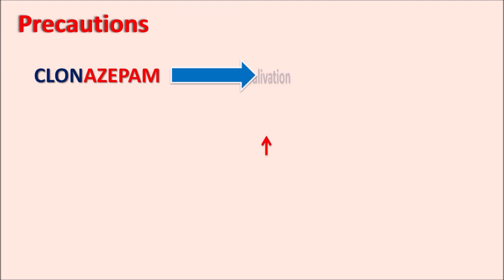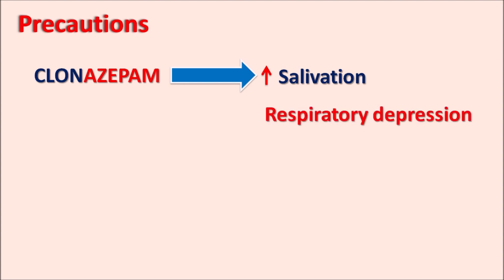Similarly, Clonazepam can also increase salivation — hypersalivation is one condition observed with Clonazepam treatment. Some respiratory depression can also be observed, so patients already having respiratory problems should use Clonazepam carefully. This drug may also increase porphyrin levels, resulting in porphyria, so if any patient is already having liver disorder, Clonazepam should be given carefully.